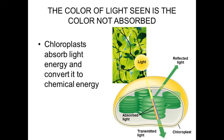The color of light seen is the color not absorbed — green color is not absorbed, and the rest of the colors are absorbed, so it looks green. There are three things that happen to light: some light is absorbed, some is reflected, and some is transmitted. Chloroplasts absorb light energy and convert it into chemical energy. This is the main function of the chloroplast.